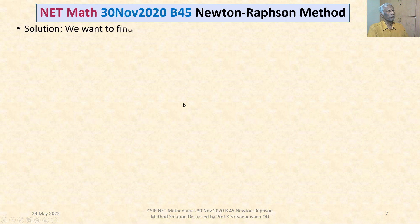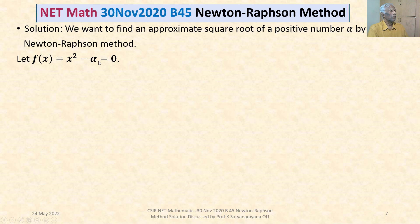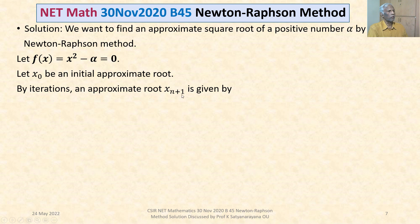Now, what is it that we want to find? We want to find an approximate square root of a given positive number alpha by the Newton-Raphson method. Therefore, we consider f(x) = x² − alpha = 0. Solving for x gives x = √alpha. Let X0 be an initial approximate root; by iterations, Xn+1 = Xn − f(Xn) / f′(Xn), provided f′(Xn) ≠ 0.